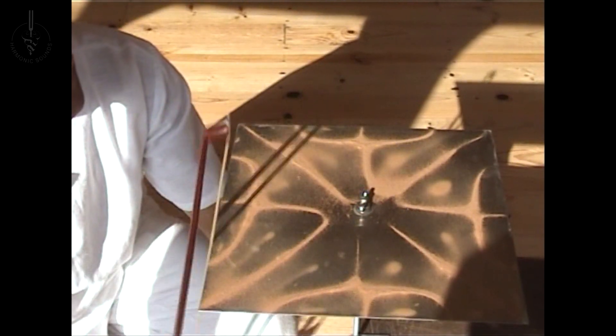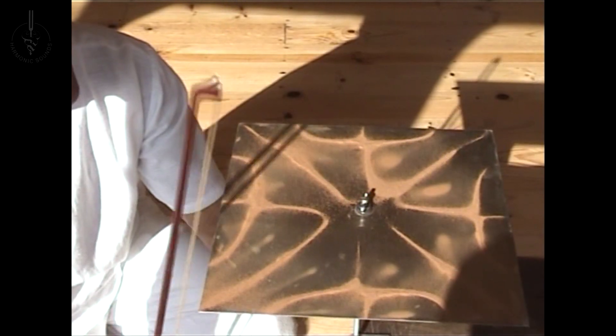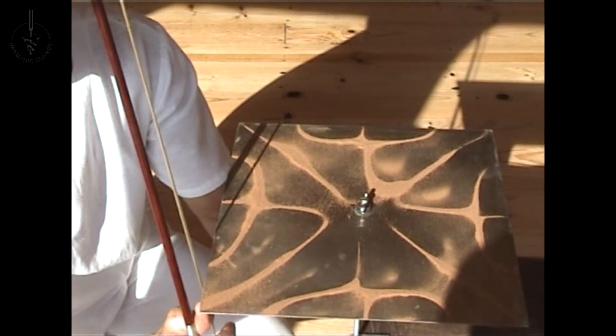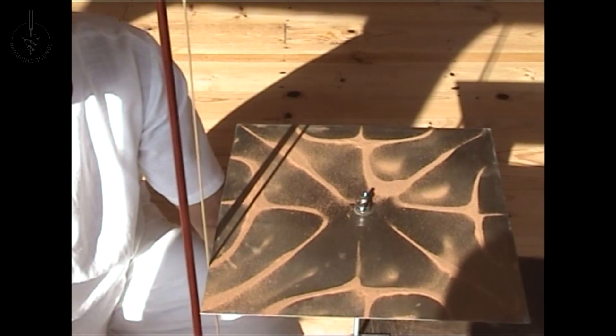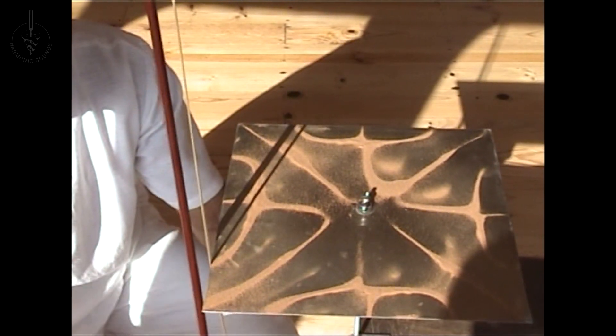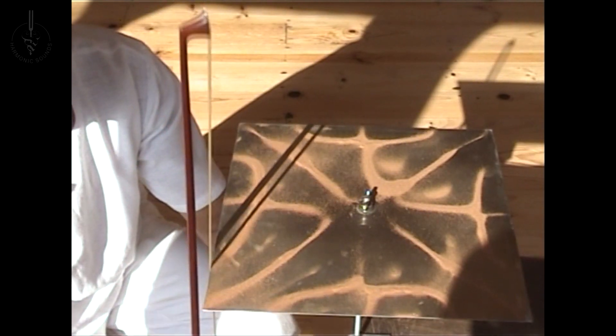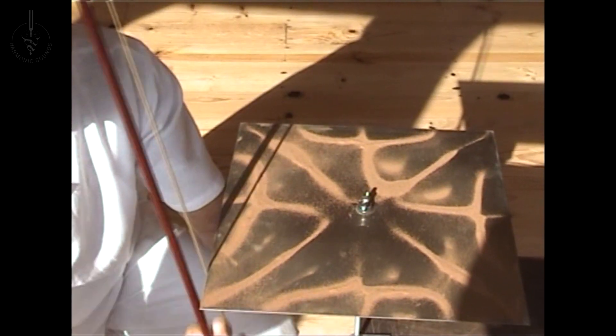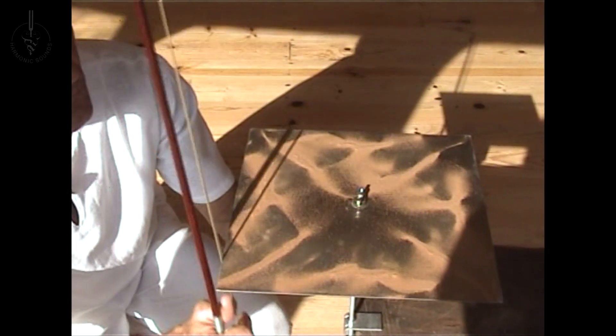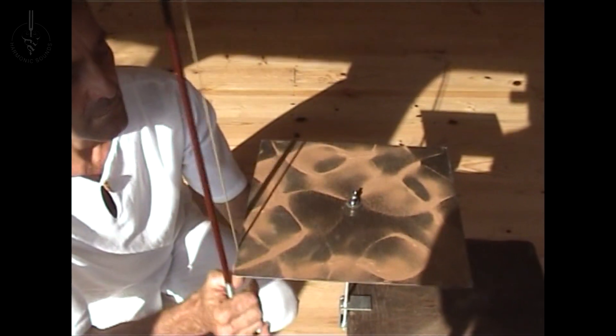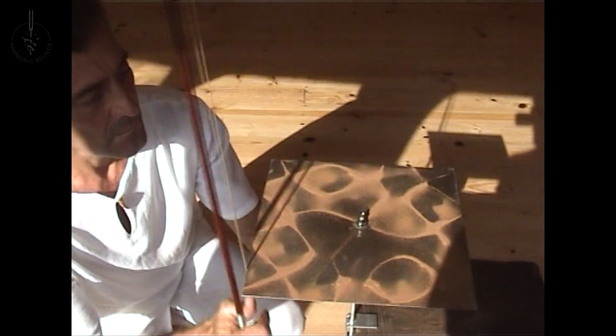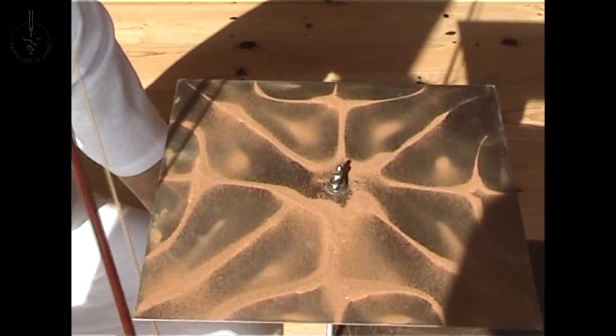Chladni figures, or cymatic images, are, in the case of harmonious sounds, geometrically symmetrical mandalas. In the case of unharmonious or dissonant sounds, they are not symmetrical, yet are nevertheless fascinating to behold, very often representing organic figures as they occur in nature.